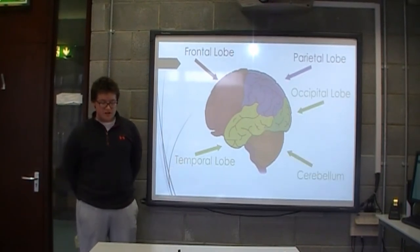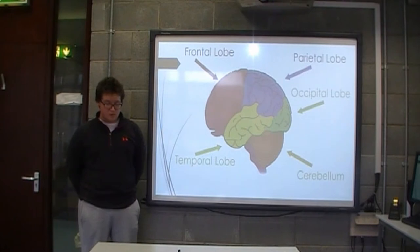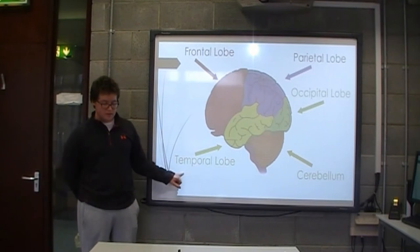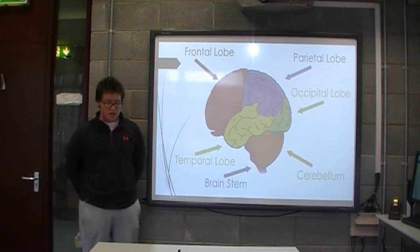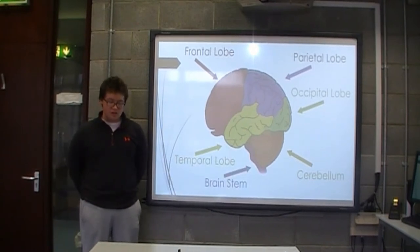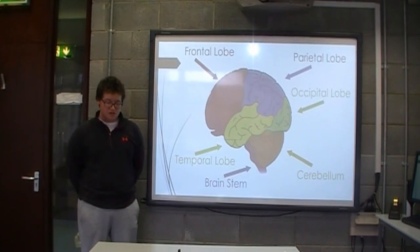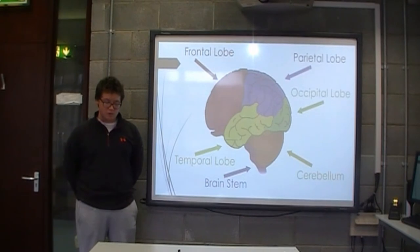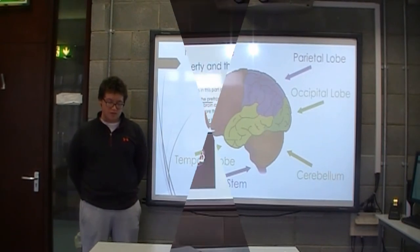The cerebellum is essential for coordinated movement and balance. It operates independently and unconsciously. The brain stem is the extension of the spinal cord. It controls basic body functions such as breathing, heart rate, blood pressure, and whether one is awake or sleeping.